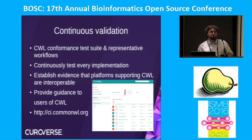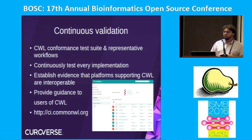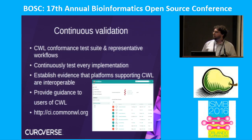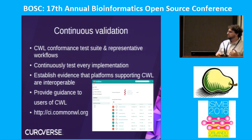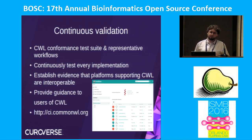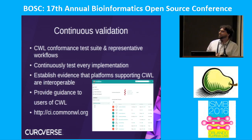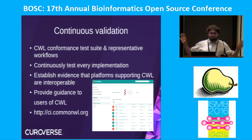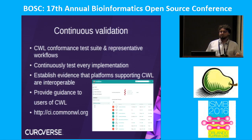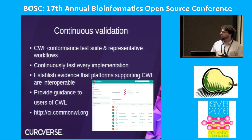One thing the community has set up is continuous validation. We have a Jenkins server with a number of different CWL implementations — Arvados, CWLTool, Galaxy, Plinimo, Toil, Bunny, Ravix — running conformance tests. Unfortunately, there are a lot of red dots right now; that's the next thing we have to work on. But this is something we can use to confidently say that these implementations are all running a set of conformance tests, a set of representative workflows, and producing reliable results.